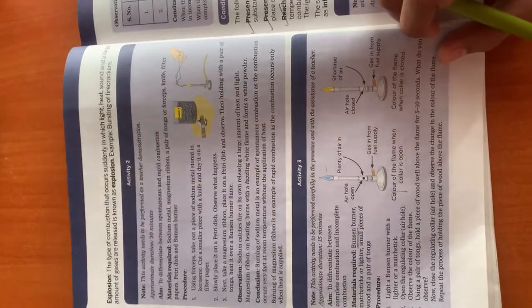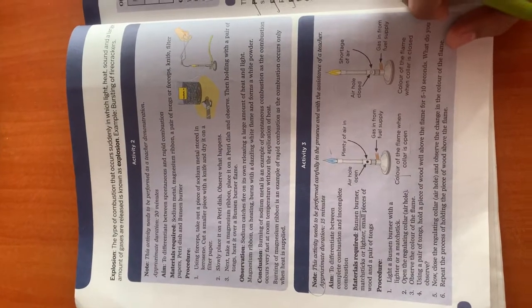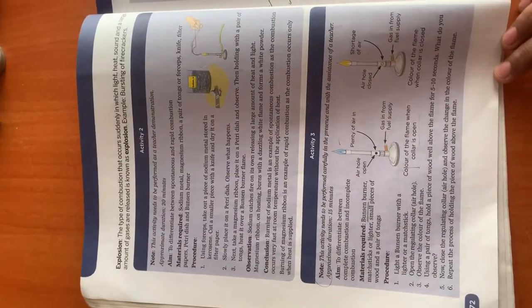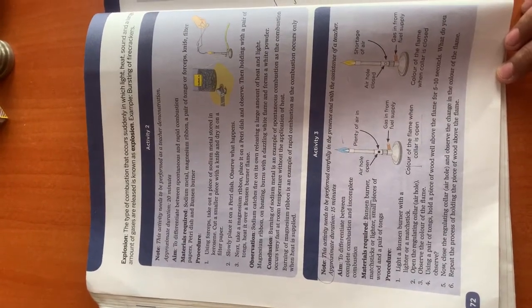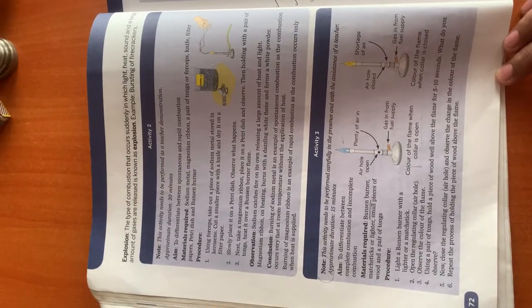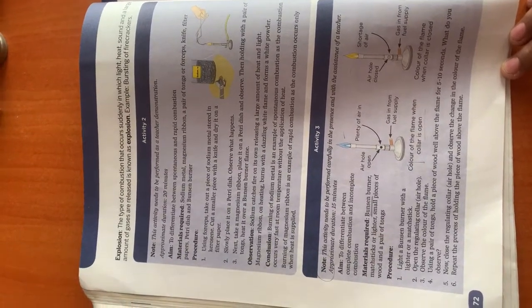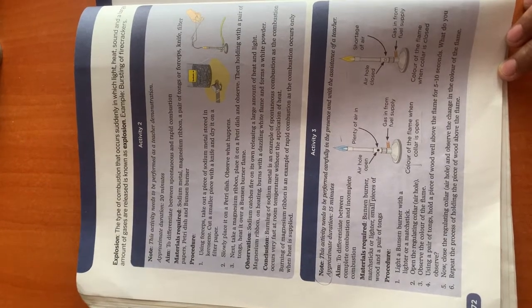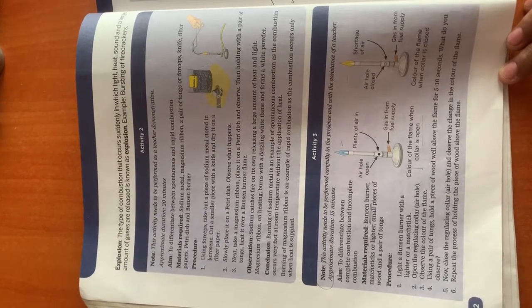The conditions necessary for combustion are: presence of a combustible substance such as paper or kerosene, presence of oxygen to support combustion, and reaching the ignition temperature. Ignition temperature is the temperature at which a combustible substance starts burning in the presence of air.